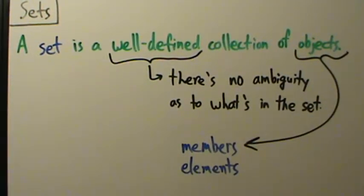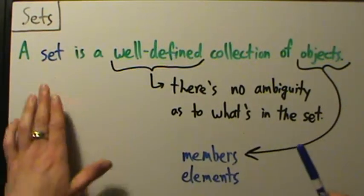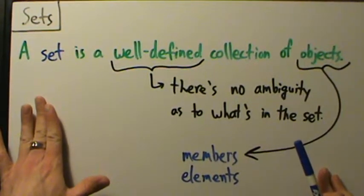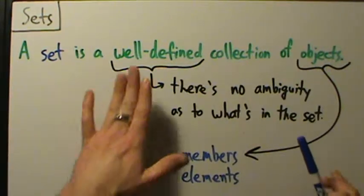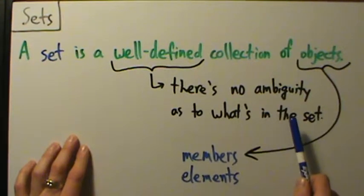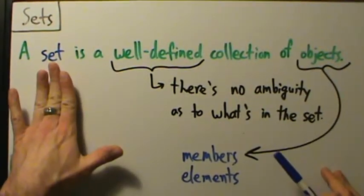So we have members in a set, elements of a set, things like that. That's just some basic definitions and this fundamental idea of a set. It's a relatively simple idea and concept, but we do want to keep in mind this well-defined notion. Remember, there's no ambiguity as to what's in the set, because if there's ambiguity, then it's not really a set in a mathematical context.